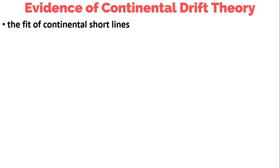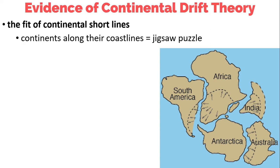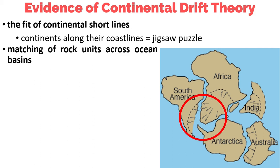Wegener cited some evidence for continental drift theory. First is the fit of the continental shorelines. Wegener viewed the apparent fit of the continents along their coastlines as pieces of a jigsaw puzzle. He said that this is an indication that the continents were once joined together. For example, the coast of Africa fits well with the eastern coast of South America.